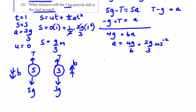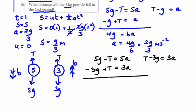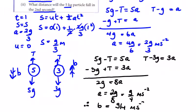Solving these, we're going to get 5g minus T equals 5a, and T minus 3g equals 3a. So minus 3g plus T equals 3a. We get 2g equals 8a. So our new acceleration a is 2g over 8, which equals g over 4 meters per second squared. So b equals g over 4.